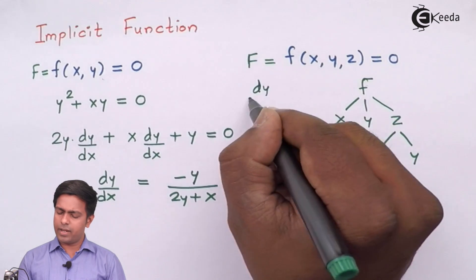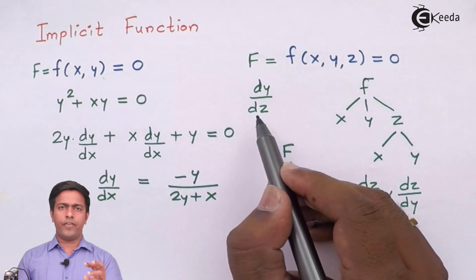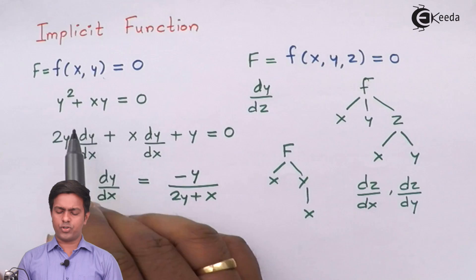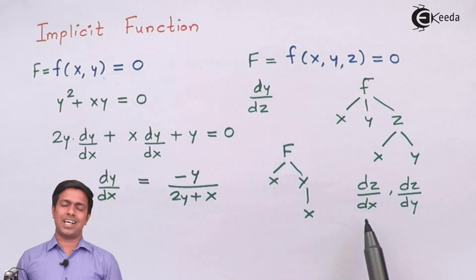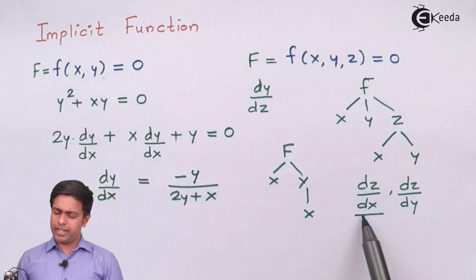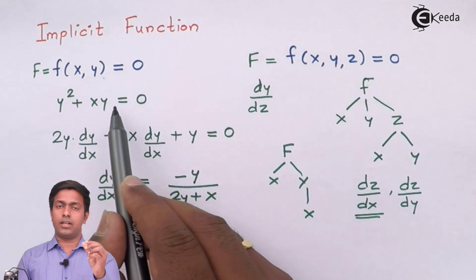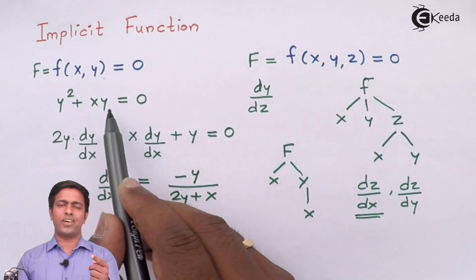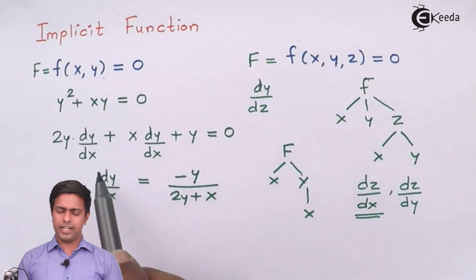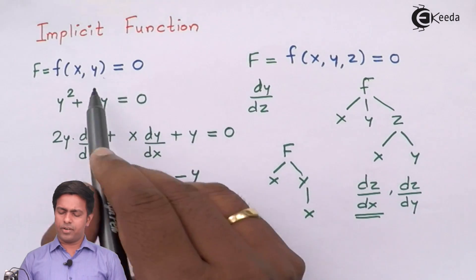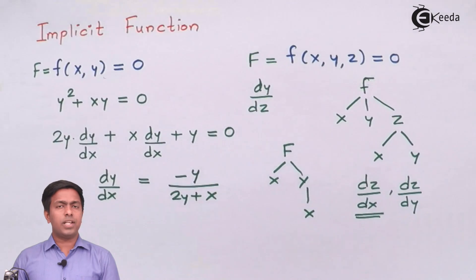There are two ways to solve implicit function problems. The first method is to differentiate each term with respect to the required variable — for example, if dZ/dX is asked, differentiate every term with respect to X, treating Z as a function of X and Y, then collect dZ/dX terms. The second method is to derive a direct formula using partial differentiation.